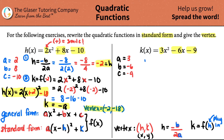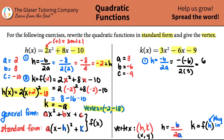Always solve for h first. h equals negative b divided by 2a. Plugging in: the negative is in the formula, and b was negative 6, all over 2 times 3. Negative times a negative is a positive, and 2 times 3 is 6. So my h value is positive 6 over 6, which is just 1.